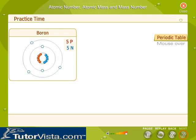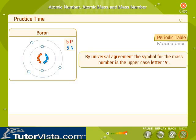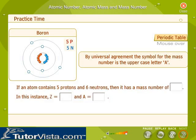Now let's move on to the mass number. By universal agreement, the symbol for the mass number is the uppercase letter A. It is written as a superscript to the left of an element symbol. If an atom contains 5 protons and 6 neutrons, then what is its mass number?